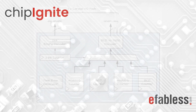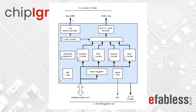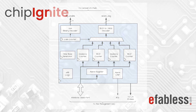In part two, the design is extended to allow communication with the firmware running on the Management SoC through the wishbone bus. This is to enable the firmware to adjust the clock time, to set the alarm time, and finally, a signal to interrupt the Management SoC when an alarm is observed.